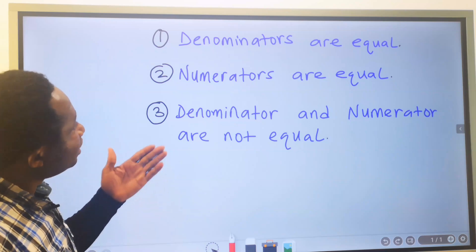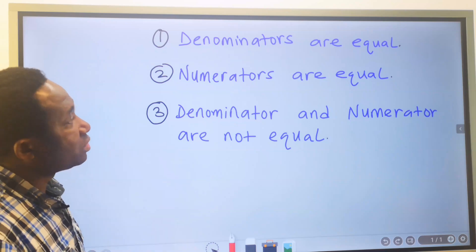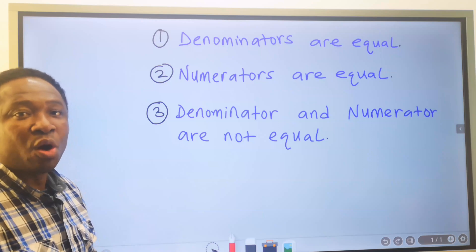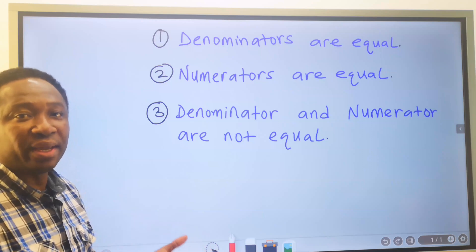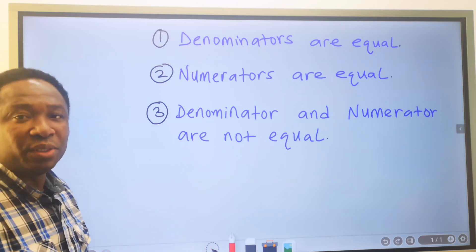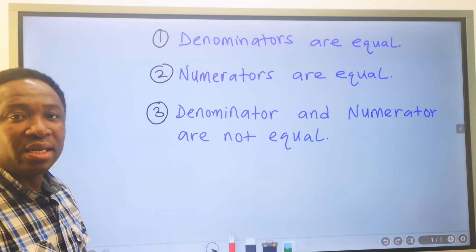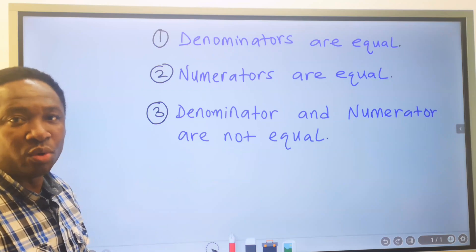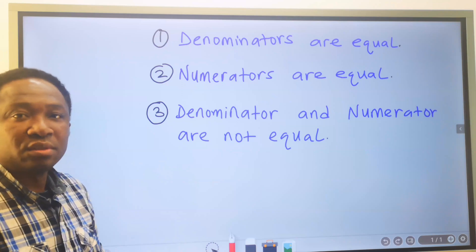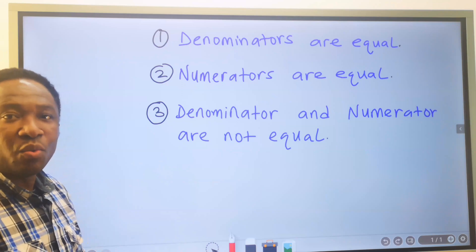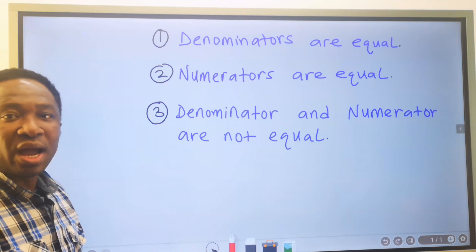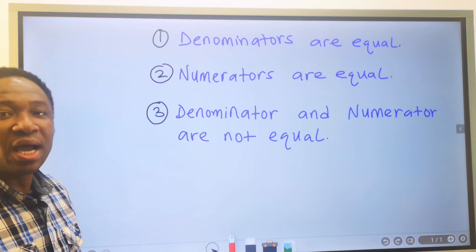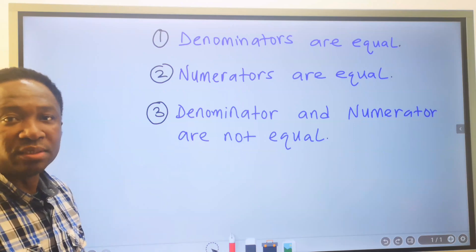Number one, when the denominators are equal — that is, the denominators of the comparing fractions. Number two, when the numerators of the comparing fractions are equal. Number three, when the denominator and the numerators do not have any equal numbers.